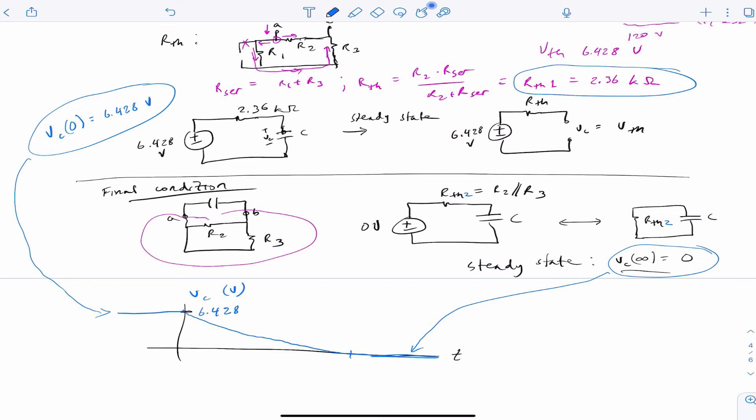If you said that it's R Thevenin 2, you would be right. That's because in this region, the switch is in position 2. So we want to use the circuit in that state, in that condition. And so R Thevenin 2 is the one that is applicable.